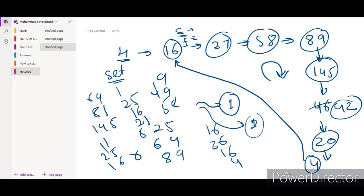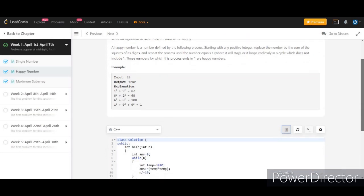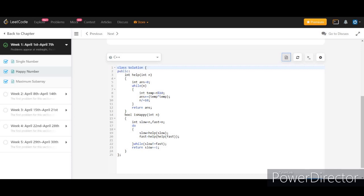Now, let us look at the code. There is a helper function which is going to return us the sum of the squares of the digits of a number.